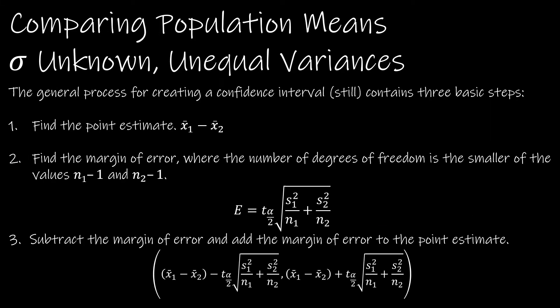The general process is the same because the standard deviation is unknown. Of course, we're using a T model. We still have means. So our point estimate is still X bar one minus X bar two. But now we're using that T star.